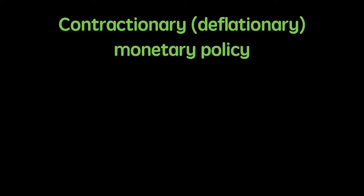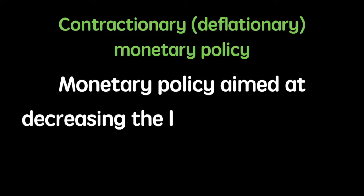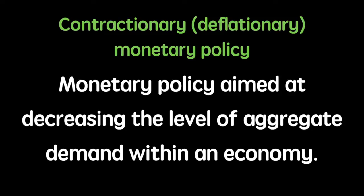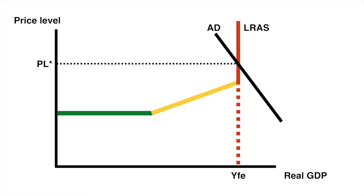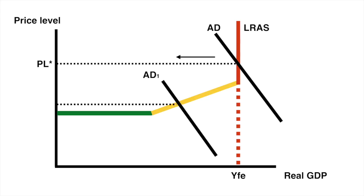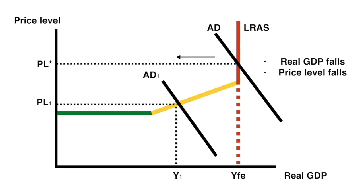Contractionary monetary policy is policy aimed at decreasing the level of aggregate demand within an economy by increasing interest rates, decreasing the money supply, or strengthening the international value of the currency. This could be an attempt to cool off an economy and reduce inflationary pressures. Consider an economy operating at full employment: the government wants to rein in economic activity so they increase interest rates, decrease the money supply, or strengthen the international value of the currency. This should eventually reduce AD to AD1, causing a decrease in the price level from PL* to PL1, and a fall in real GDP from YFE to Y1, as consumption, investment, and the value of net exports falls.